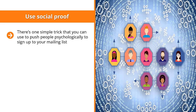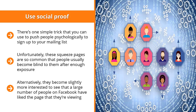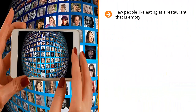Use social proof. There's one simple trick you can use to push people psychologically to sign up to your mailing list. We've all seen squeeze pages before — typically there's an email field, a call to action, and a submit button, and maybe a nice-looking graphic on the side. Unfortunately these squeeze pages are so common that people usually become blind to them after enough exposure. However, people do sit up and pay attention when they see that their Facebook friends have signed up to the list, or when they see that a large number of people on Facebook have liked the page they're viewing. This is called social proof.